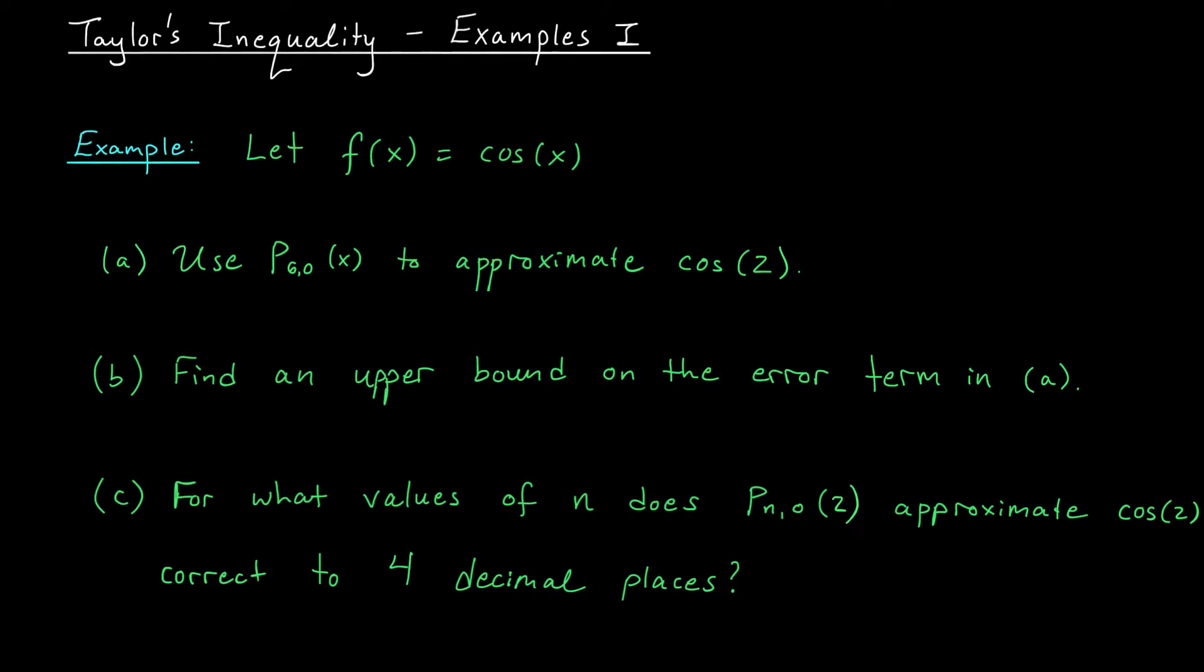For today's problem, consider the function f(x) equals cos(x). I'd like to begin by using p6,0, the 6th degree Maclaurin polynomial for this function, to approximate cos(2). Next, I'd like to find an upper bound on the error of this approximation using Taylor's inequality. Finally, maybe it's the case that the approximation from part a is just not quite good enough. Maybe I want to approximate cos(2) to at least 4 correct decimal places. The question is, which of our nth order Maclaurin polynomials will achieve this level of accuracy.